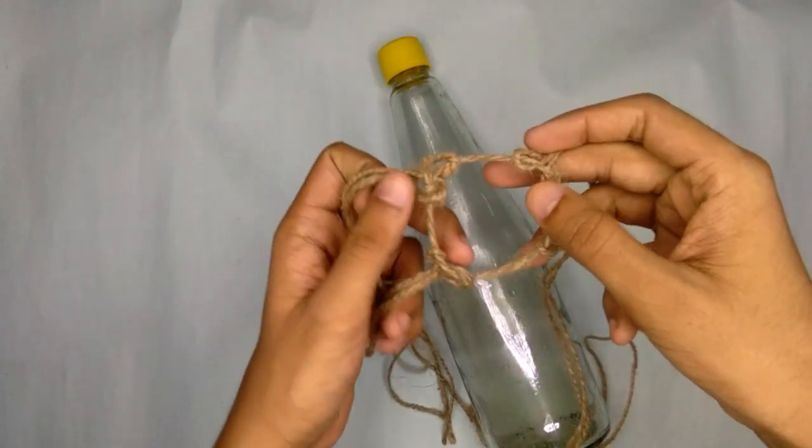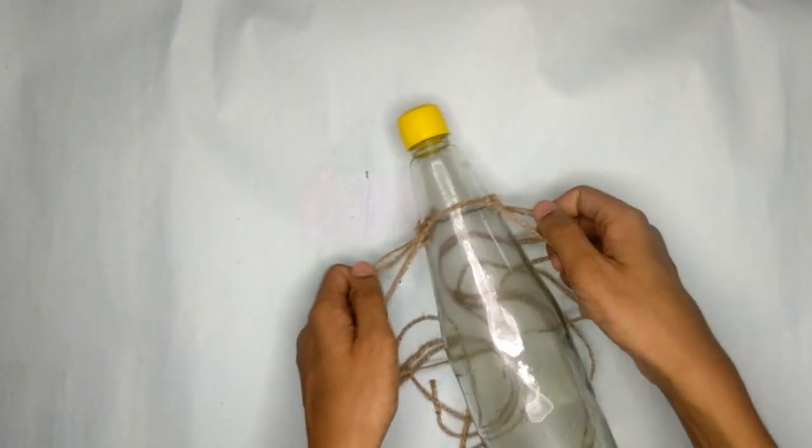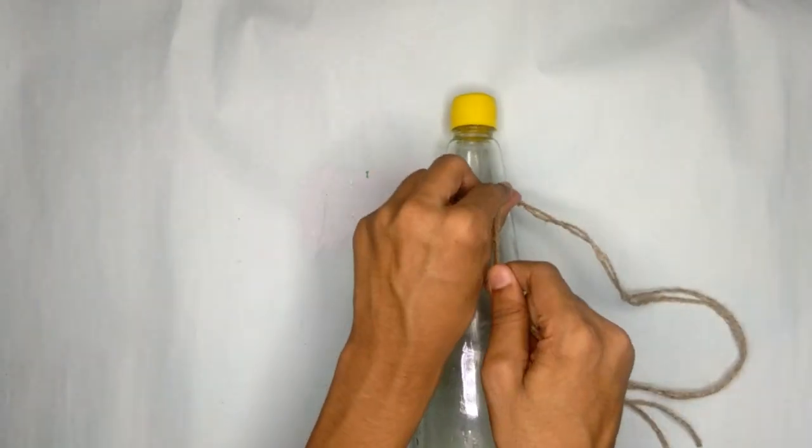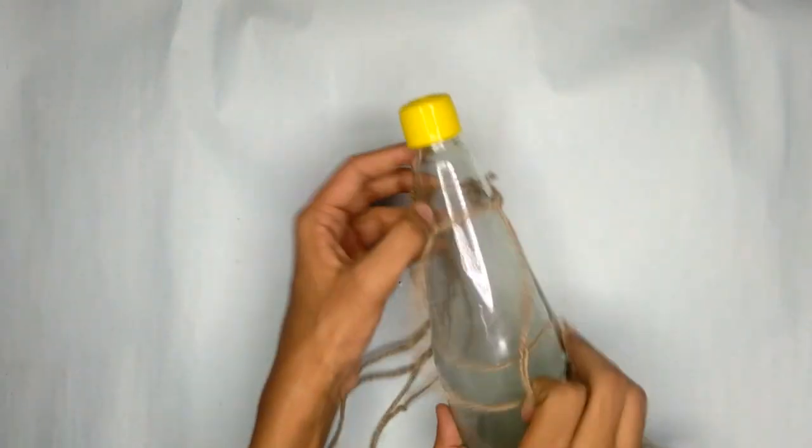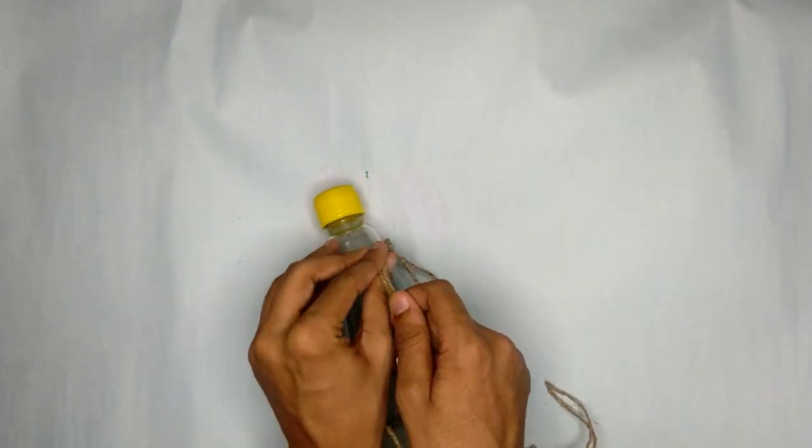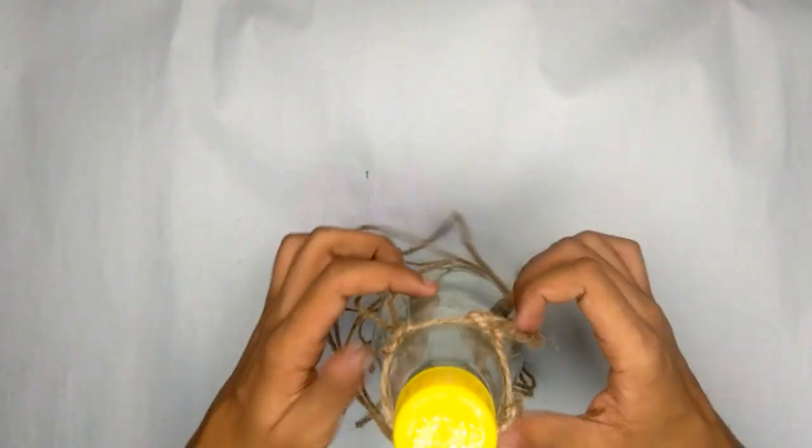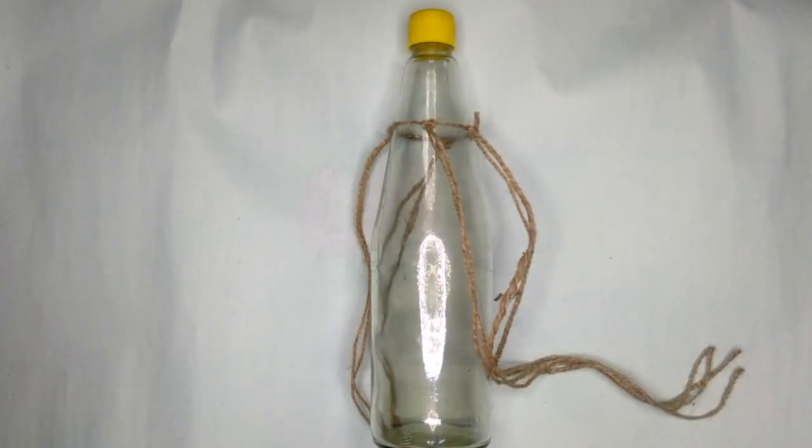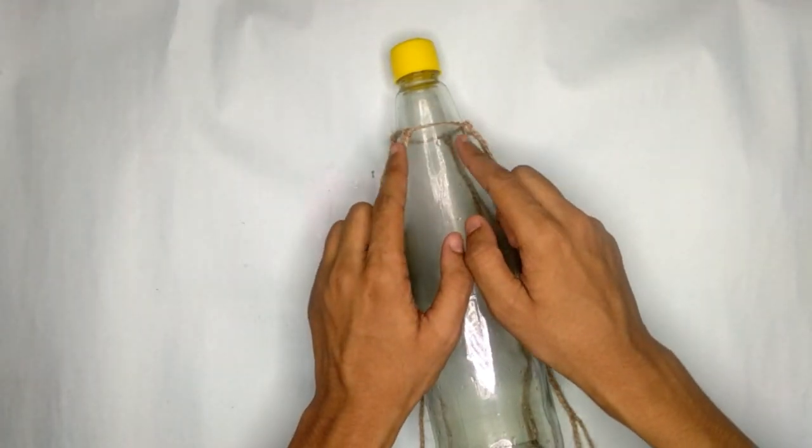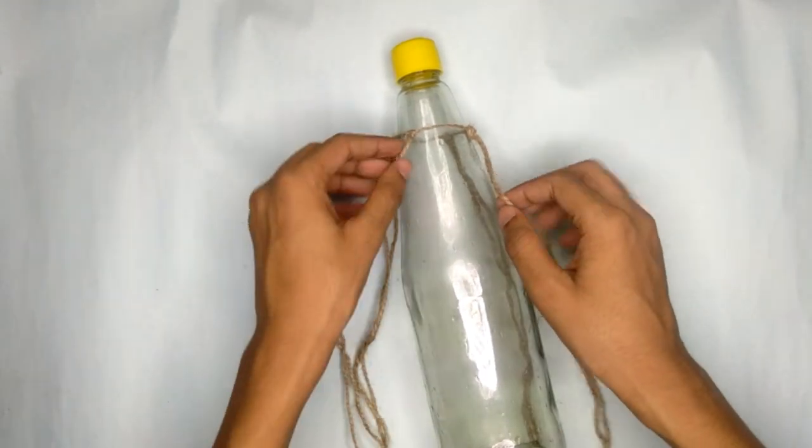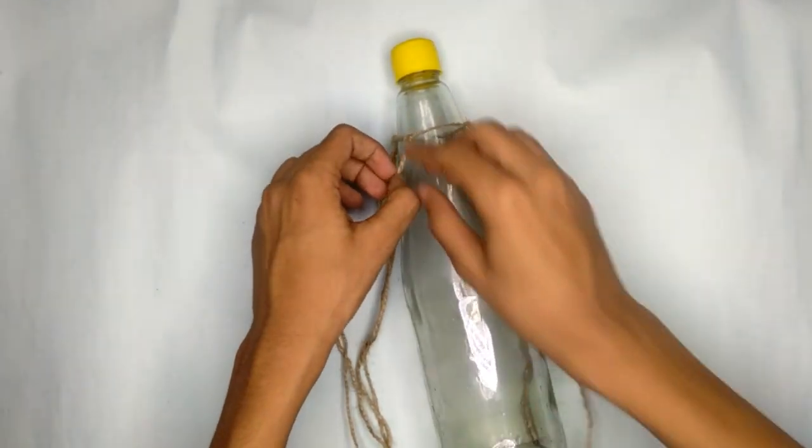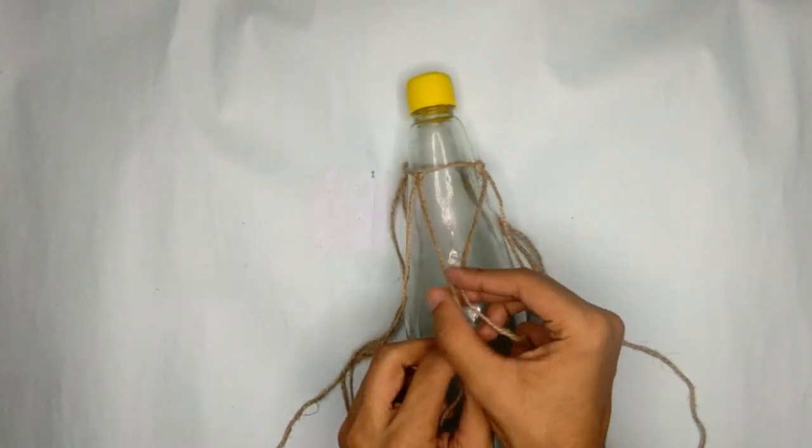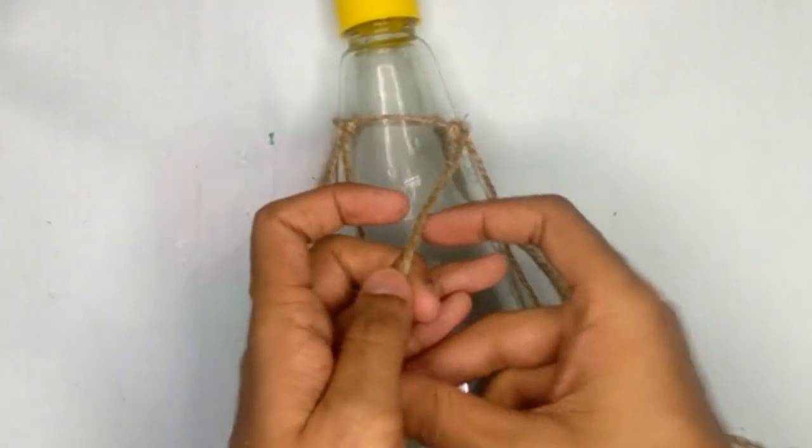Now we will start the process of knotting. Put on the loop and ensure that the knots are tight enough. For knotting, take one thread from each corner and simply tie it, forming a triangular look.